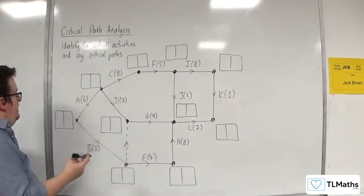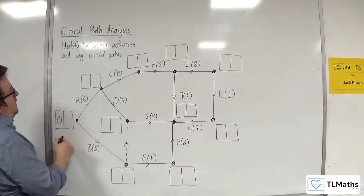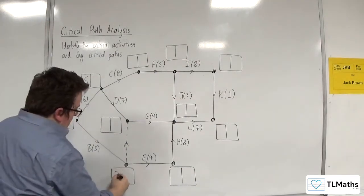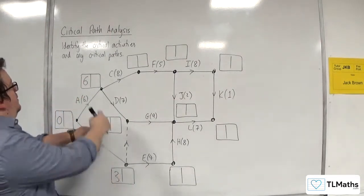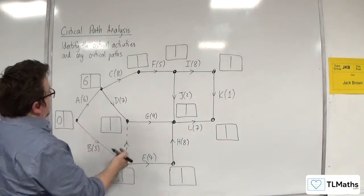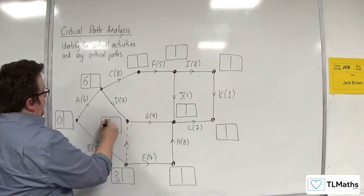So we're starting over here, so that'll be 0. Then we're going to have 6 in there, and we're going to have 3 in there. So for this box, we've either got 6 plus 7, so 13, or 3 plus 0. So we take the larger, so that's 13.